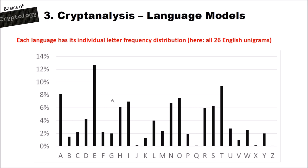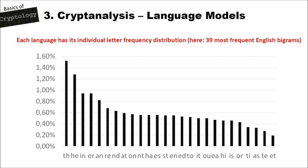Here is another example showing bigram distributions. On this slide are the 39 most frequent English bigrams. For instance, TH is the most frequent English bigram, HE is the second most frequent, then IN, and so on. We can also use the knowledge that these bigrams are more frequently used in the language than others to break ciphers, as we will see on the next slides.